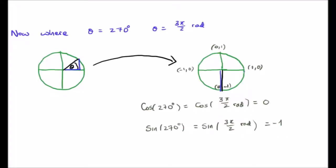On to the final cardinal angle: we move the point to that corresponding to 270 degrees, or 3π/2 radians. Here on the unit circle, x equals 0 and y equals -1. So x is cos(3π/2) and y is sin(3π/2). This means the cosine of 270 degrees, or 3π/2 radians, is 0, and the sine of 270 degrees, or 3π/2 radians, is -1.